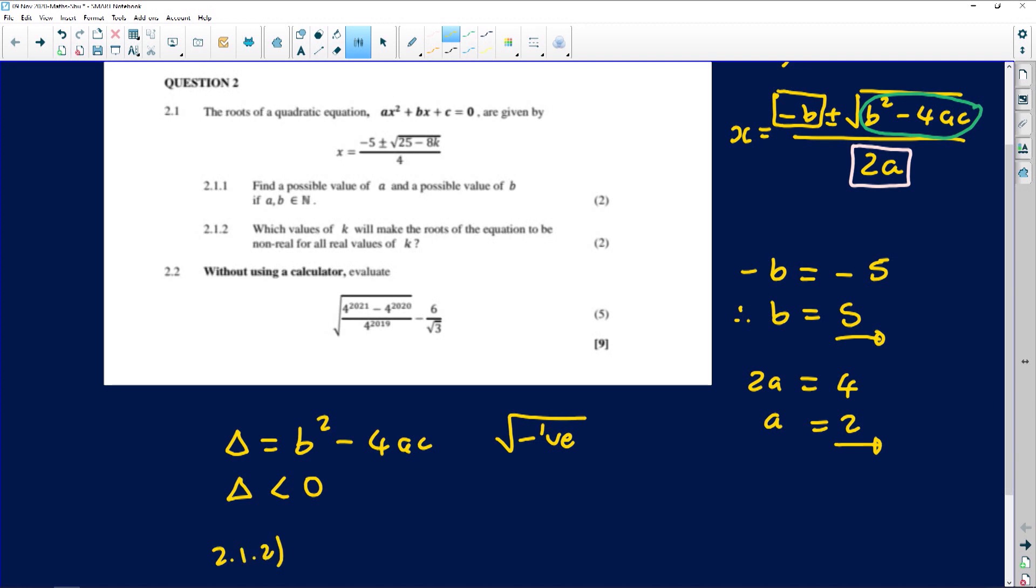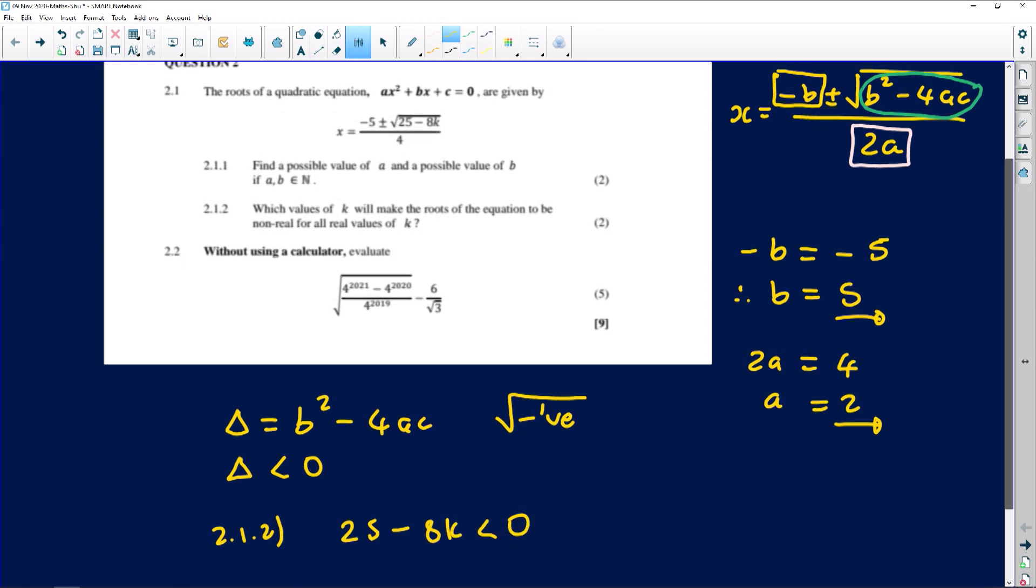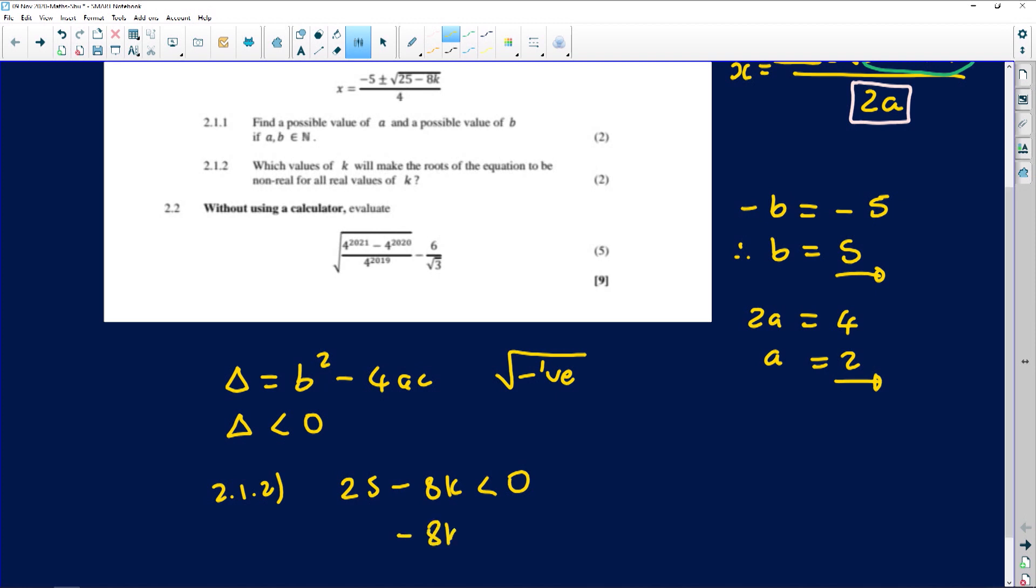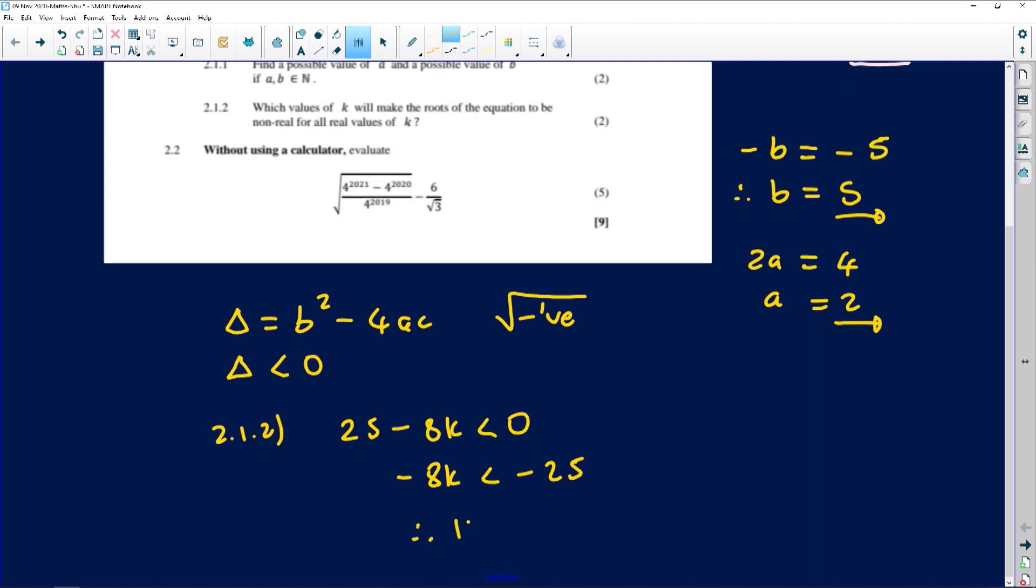For 2.1.2, I'm going to take 25 - 8k and put it less than 0 for roots to be non-real. From here, you've got -8k < -25. You need to divide both sides by -8, which leaves you with k > 25/8. Please keep in mind that every time you divide or multiply in an inequality by a negative, the inequality needs to change direction. This only happens if you're dividing by a negative.